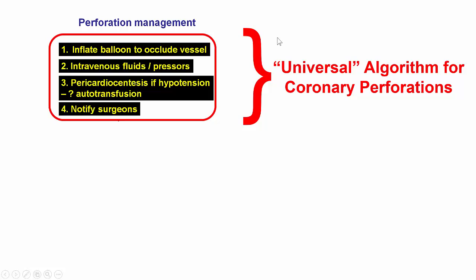That brings us to the algorithm for managing perforations, which we divide into two major categories. The first part is the so-called universal algorithm that describes four steps applying to any kind of perforation at any time, any circumstance. The very first step is to stop the bleeding into the pericardium by inflating a balloon to occlude the vessel and prevent further extravasation. Second, give fluids and potentially pressors if pressure drops. If pressure drops due to tamponade, pericardial synthesis may be needed. If there is a large amount of blood, autotransfusion is another option. Fourth, notify the surgeons, although in the vast majority of cases surgery will not be needed.